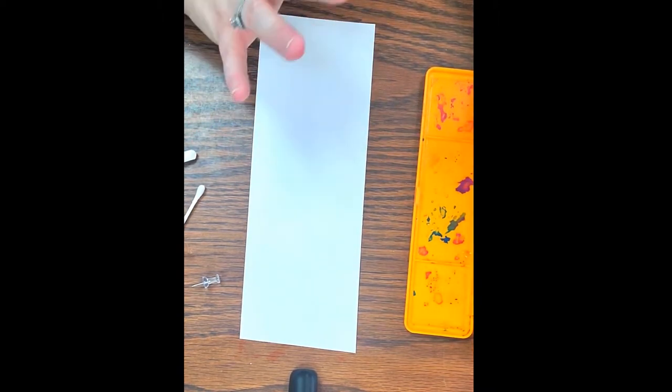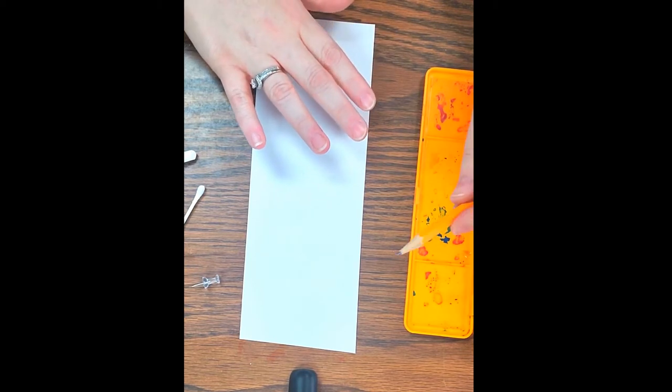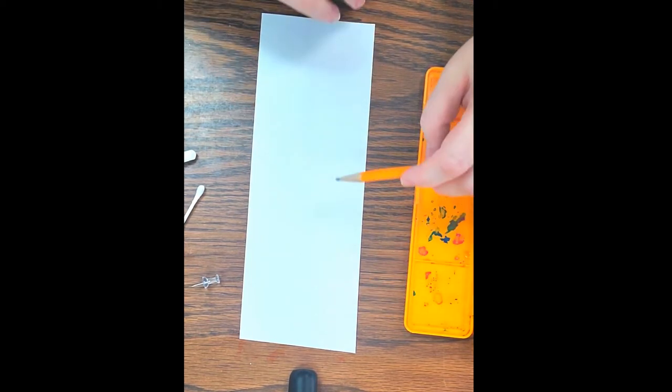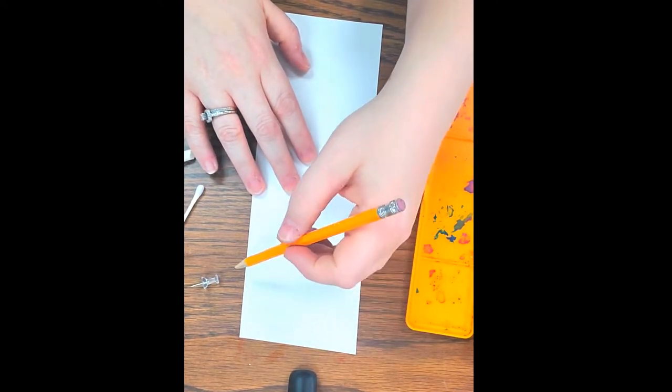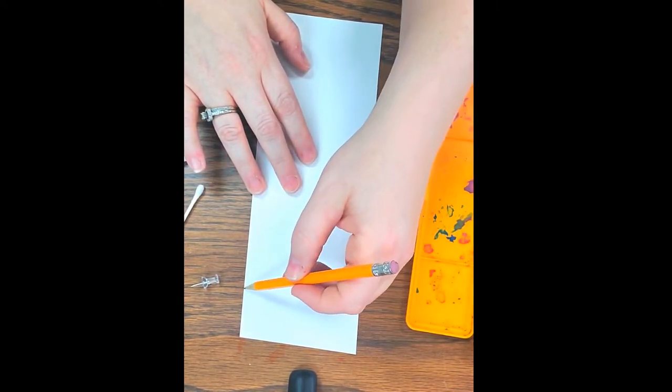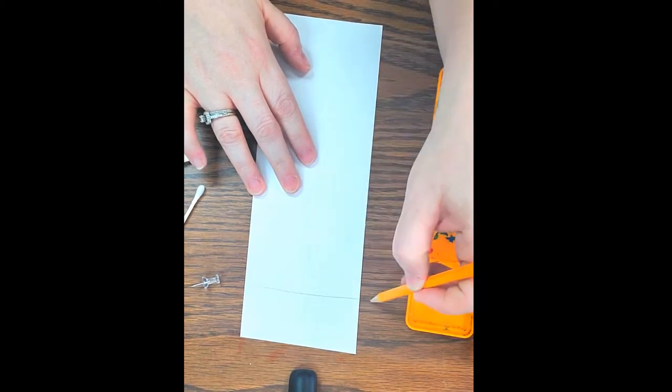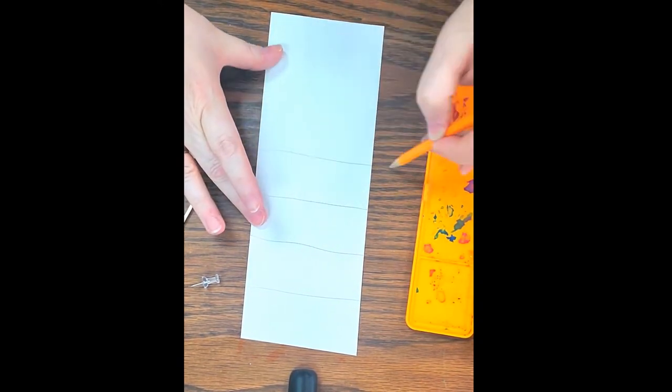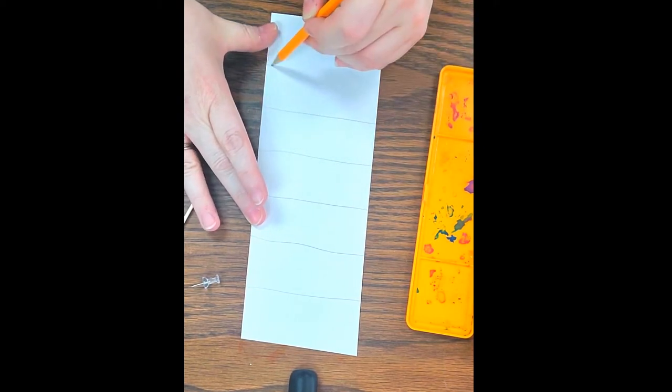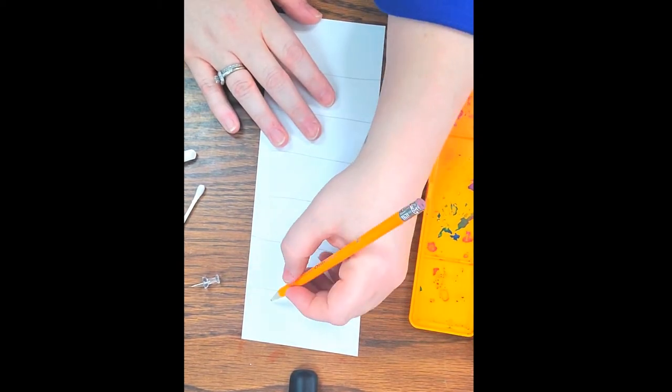Okay, so what we're going to do is split this paper up into different sections. I want to do seven different techniques, so I'm going to put six lines on there - one, two, three, four, five, and six. They don't have to be perfect at all. I'm just doing that so I can see my sections.